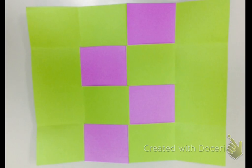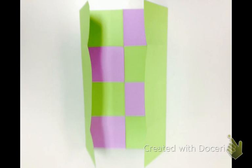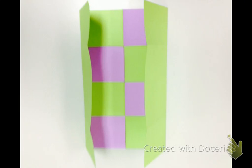I'm going to close the doors on my foldable and we're going to start with the outside pieces of information. On the outside of my foldable I put all the different names of the conic sections that I want to talk about.